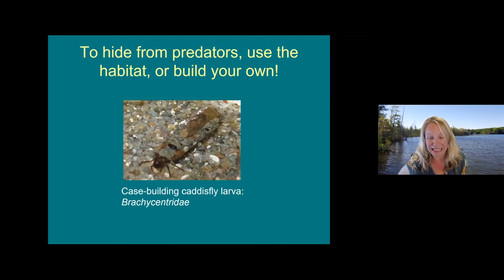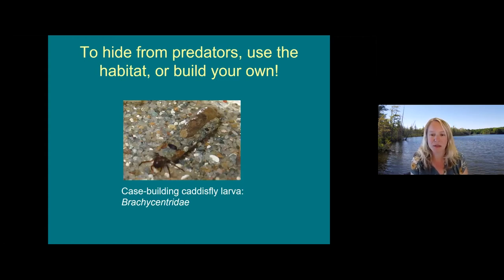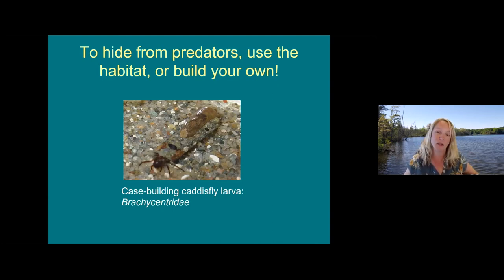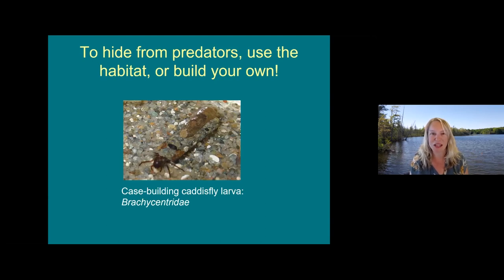Another thing invertebrates need to do in their habitat is hide, since most of them are prey for something else — larger invertebrates, fish, or amphibians. They'll hide in amongst the stream bottom material, plants, and wood — another reason to be thorough in your sampling. Or they may build a hiding place, like these case-building caddisflies. The invertebrate itself looks kind of like a caterpillar with longer legs at the front. They build a case, and the cases are actually useful for identifying what kind of caddisfly you have, since each genus or family builds its own distinctive shape using materials from around them for camouflage. Always look for that twig that seems to be crawling around on its own — that's likely a caddisfly in its case.